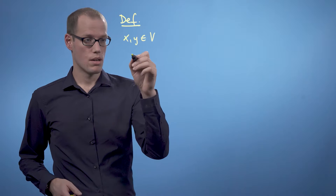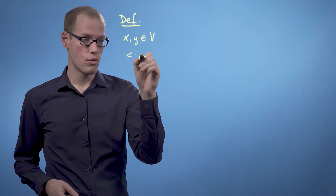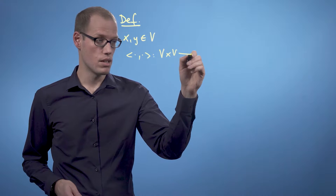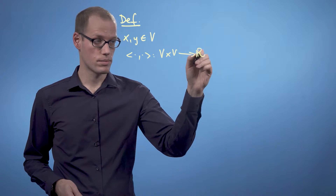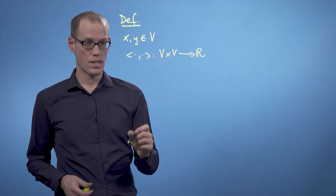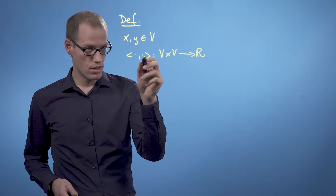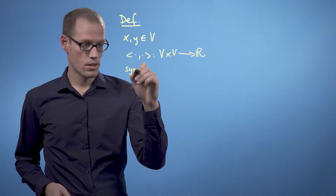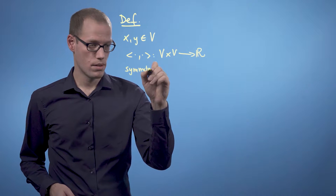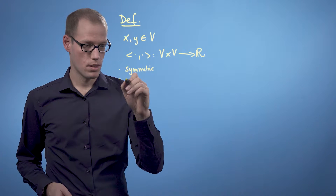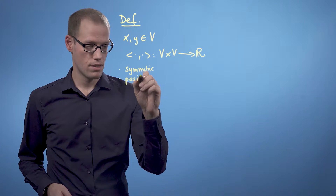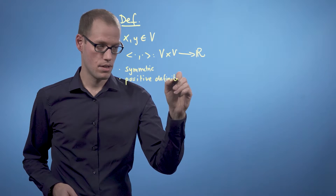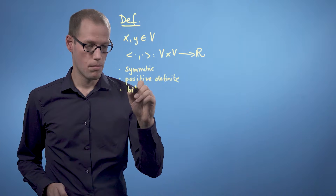An inner product is defined as a symmetric, positive definite, bilinear mapping. We take a mapping that takes two inputs out of this vector space — it's a mapping from V times V to the real numbers. And we say this function is symmetric, positive definite, and bilinear.